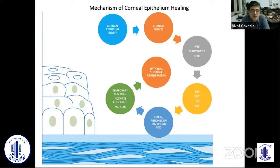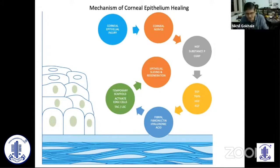This temporary scaffold activates cells at the edge of the epithelial breakdown to rapidly spread over, and also sends signals to the transient amplifying cells in the limbal stem cells in case there is a significant epithelial breakdown. Eventually there is epithelial sliding and regeneration, and the surface heals up.